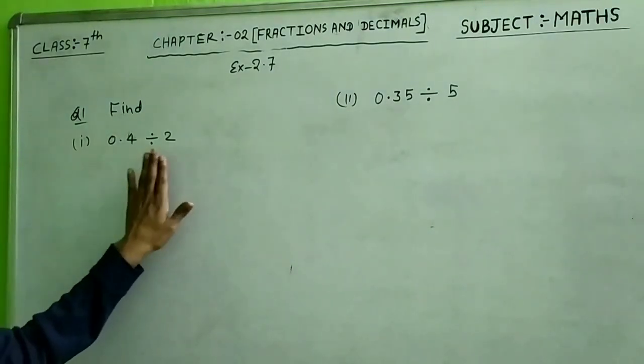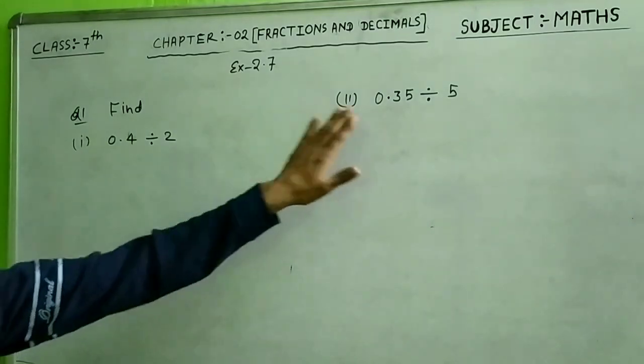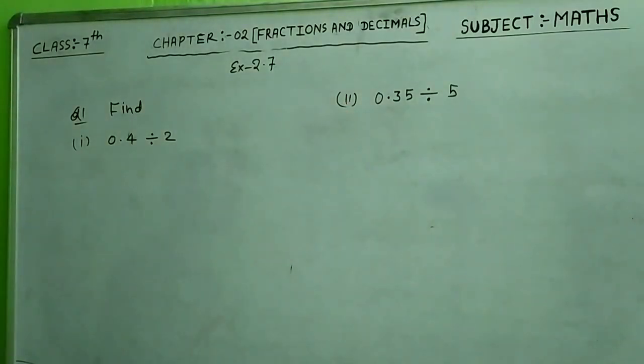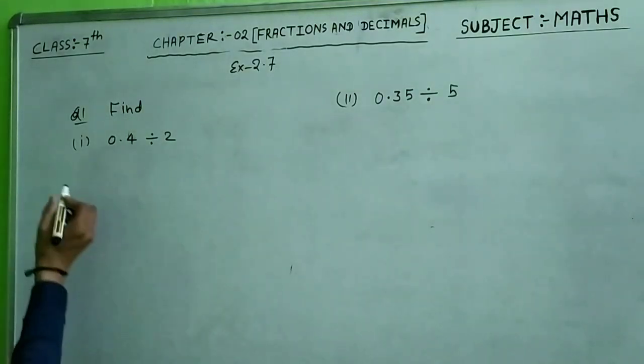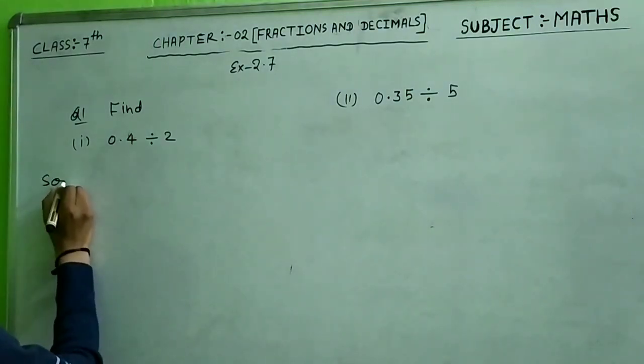Part one: 0.4 divided by 2. Second part is 0.35 divided by 5. So, how do we do this? We will solve this.